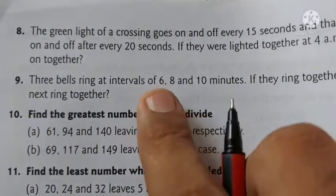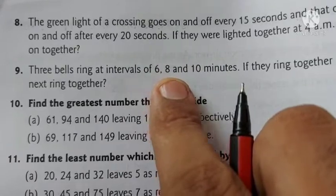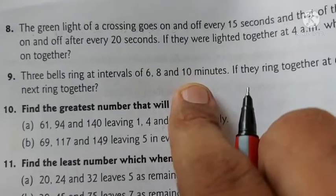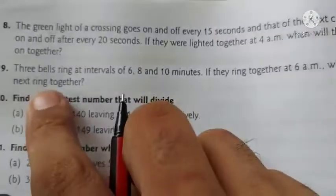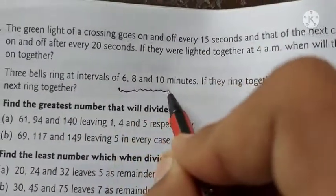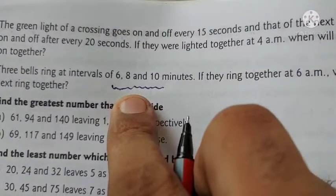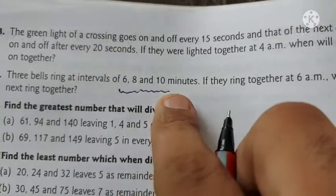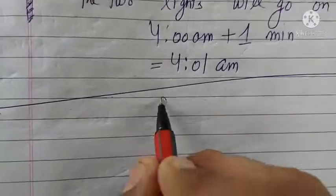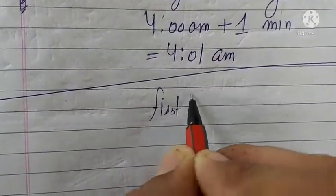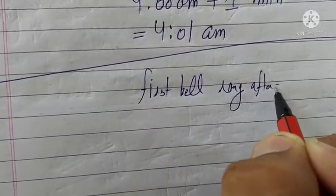Question number 9: There are three bells. One rings after every 6 minutes, one rings after every 8 minutes, and one rings after every 10 minutes. Suppose they all ring together at 6 AM. When will they ring together again? We will find the LCM of all three intervals, and that will be the time when all bells ring together.